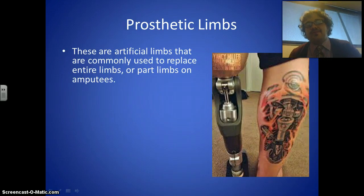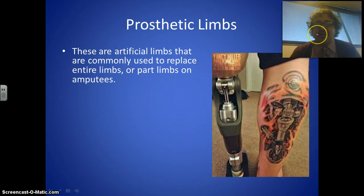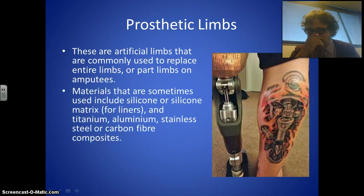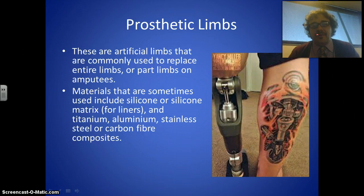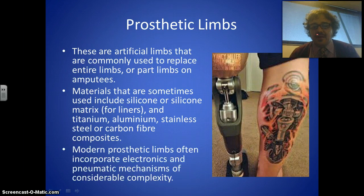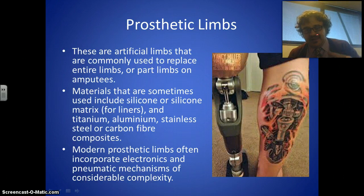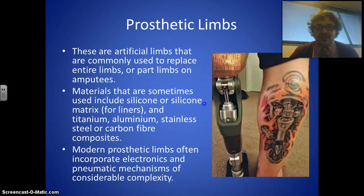Prosthetic limbs are artificial limbs used to replace entire limbs or parts of limbs, primarily for amputees from accidents. The soft parts, like liners, use a silicone matrix, while the limb structure itself is made from titanium, aluminium, stainless steel, or carbon fiber to be super strong. Modern limbs have advanced well beyond wooden peg legs — they now include electronics and pneumatics, making them far more complex and functional than before.